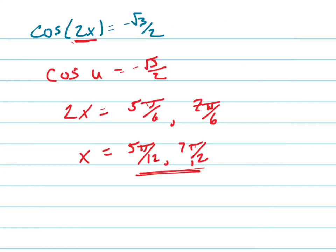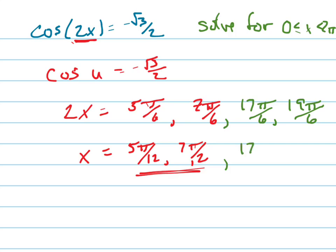We're assuming that they want you to solve this for x between 0 and 2 pi. All right, so I'm going to add these two values here, 17 pi over 6 and 19 pi over 6, which means when I solve, I'm dividing by 2, I'm going to get 17 pi over 12 and 19 pi over 12.